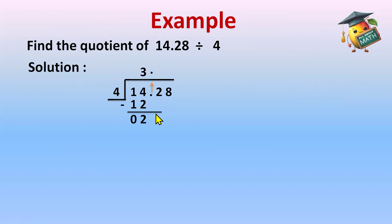Now, 2 will come down. 4 into 5 is 20. Now, subtraction: 22 minus 20 is 2.